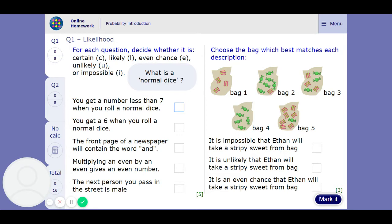You get a number less than 7 when you roll a normal dice. Well, every number on a normal dice is less than 7, so I'm certain. You get a 6. Well, that's going to be unlikely, because that's less than an even chance, but it is possible, so it's not impossible.